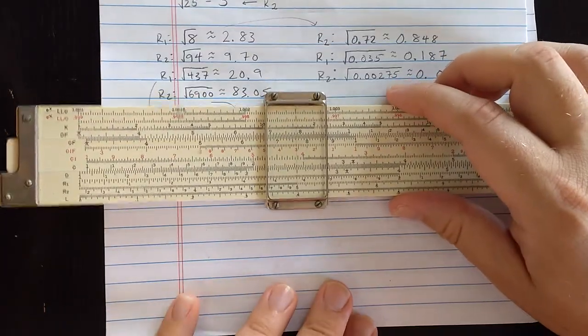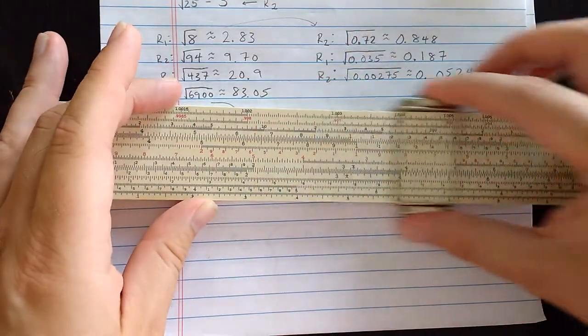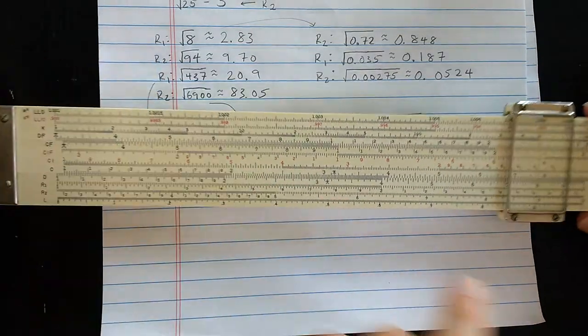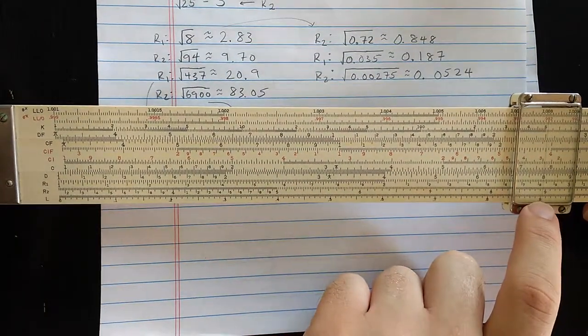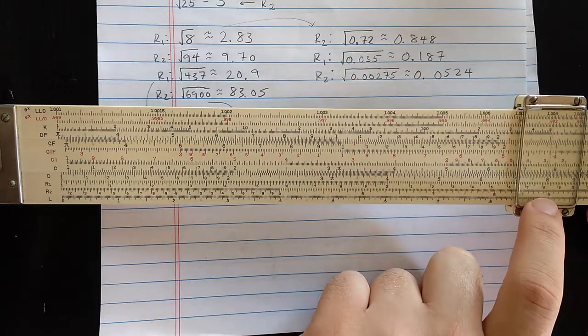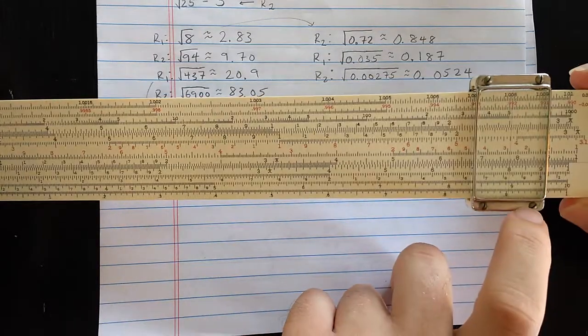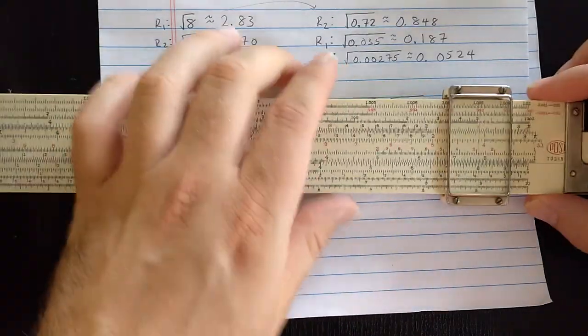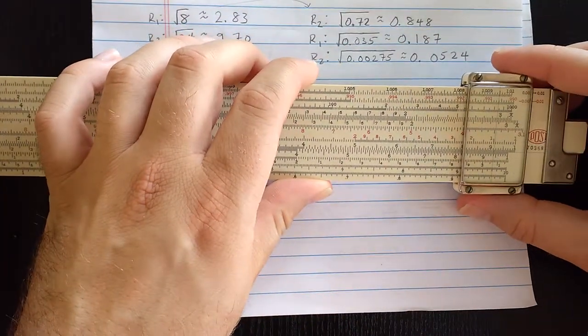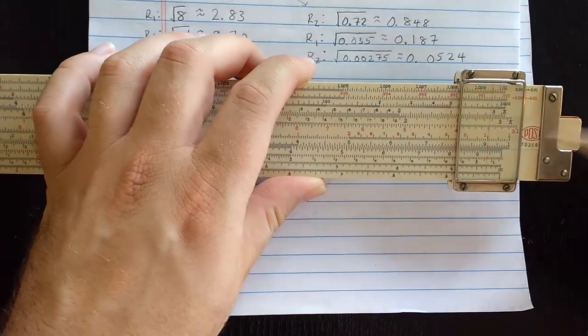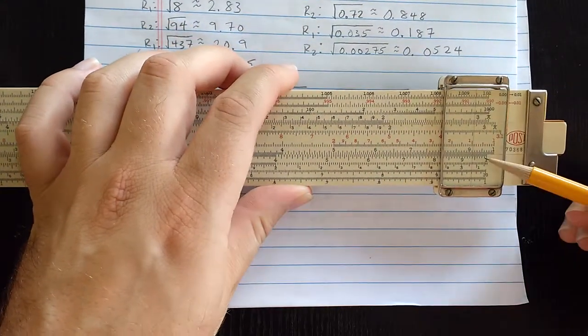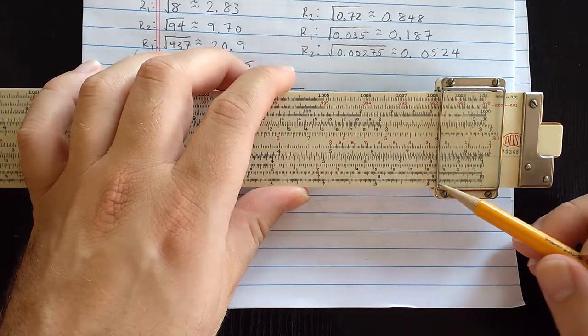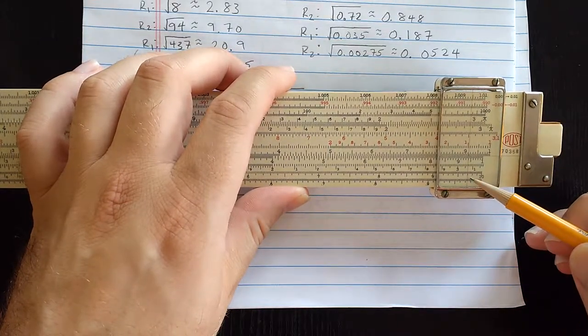So let's try something a little less clean here. So if I want square root of 8, I will set 8 on D, and then I will read there on R1, 2.83 on R1. If I set 94, I'll set that as 9.4 on D. Then, since that is a two-digit number, I should read that on R2, which is here. This is 9.567, 9.7.